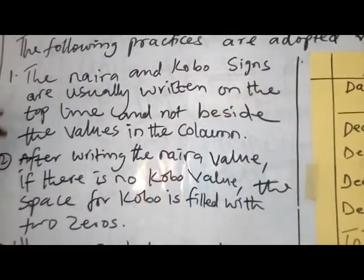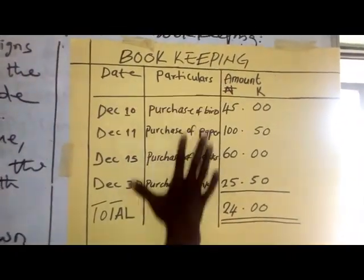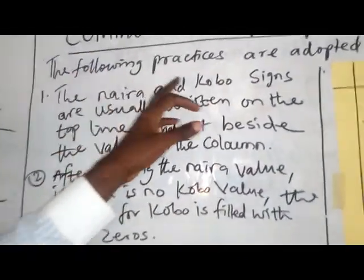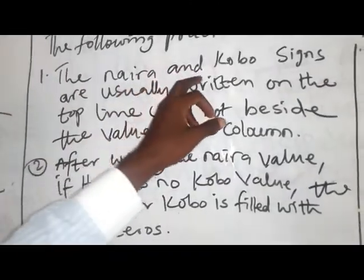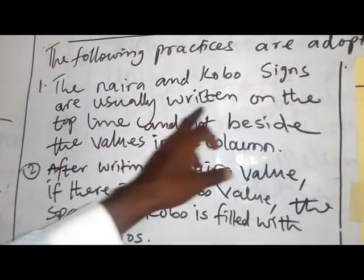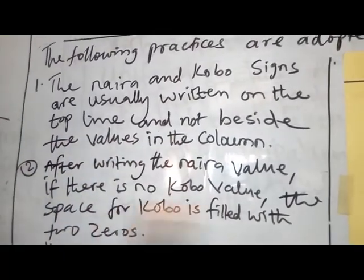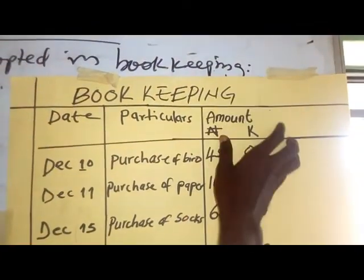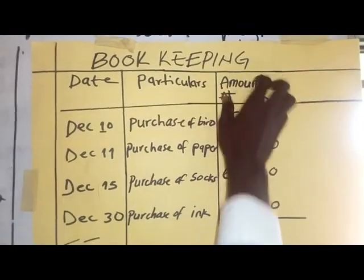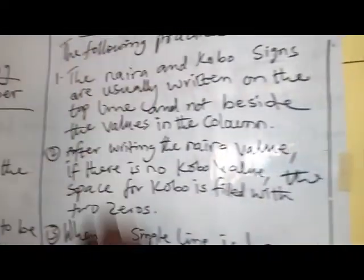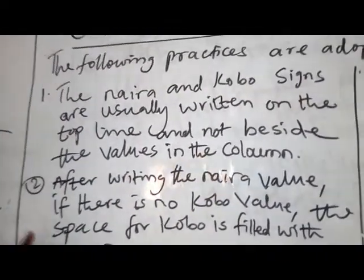Number one: the naira and kobo signs. The naira and kobo signs are usually written on the top line and not beside the value in the column. So they are written on the top side of the amount, not by the side of the value. That is what this first practice is saying.